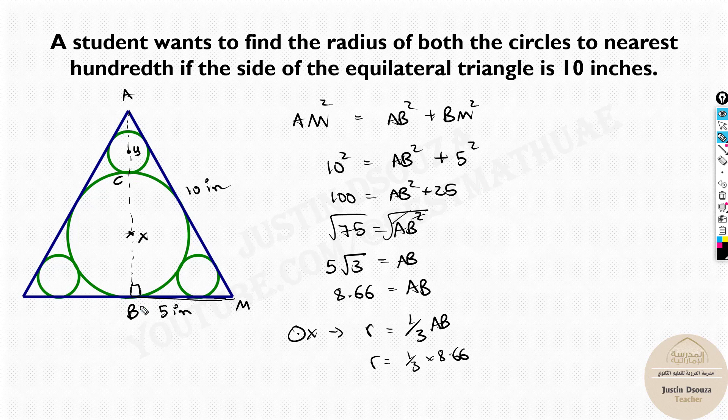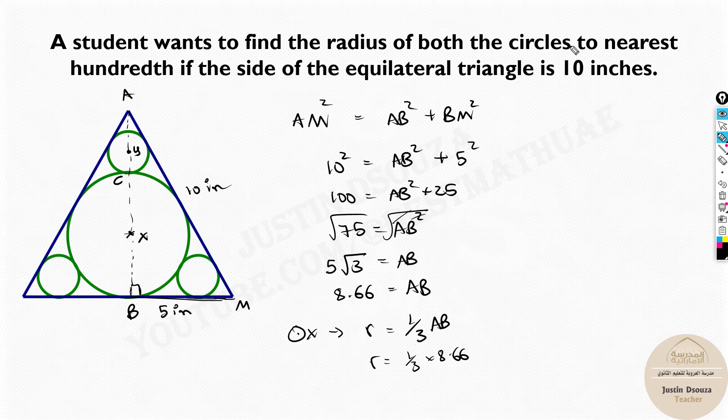So R is basically 1/3 of 8.66. If you split the entire height into 3 pieces, 1 piece would be the radius of the larger circle.